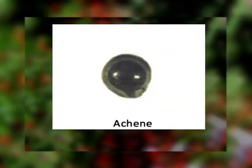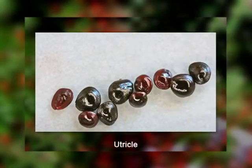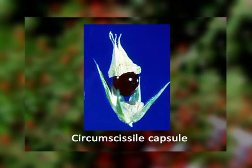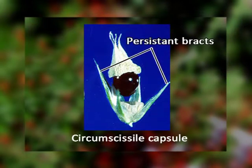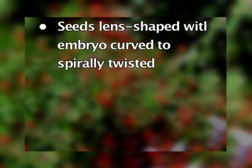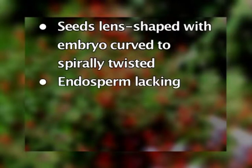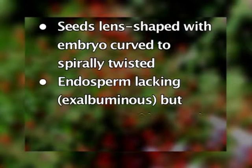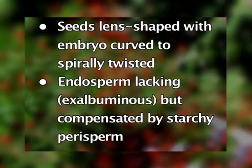The fruit in Amaranthaceae is an achene, utricle, or it can be a circumscissile capsule. The fruit is often associated with persistent bracts. The seeds are lens-shaped with an embryo that is curved to spirally twisted. These seeds lack endosperm — that's why they are called exalbuminous — but this is compensated by a starchy perisperm.